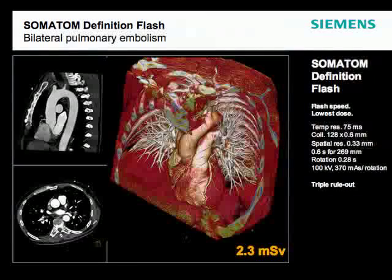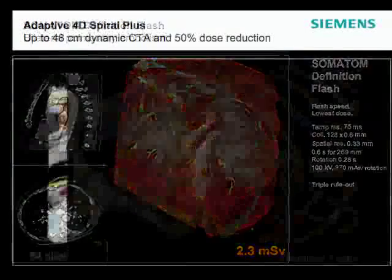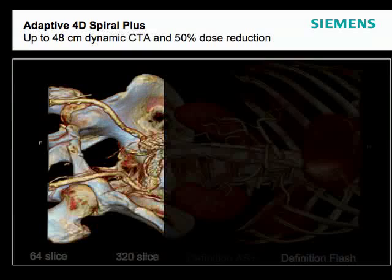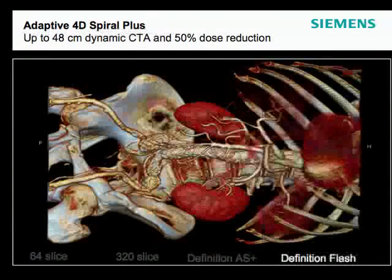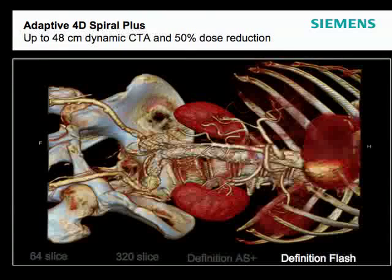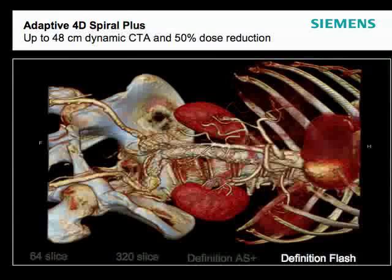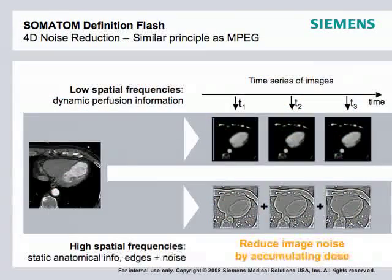Adaptive spiral technology provides phase-resolved imaging showing venous and arterial phases as well as pre-contrast, so all dynamics are visible. Coverage ranges from 64 up to 48 centimeters with flash, and the scanner moves at 43 centimeters per second — extremely fast. Phase-resolved imaging is achieved at 50% dose reduction by combining high and low spatial frequencies, using static anatomical information for edges and noise, thereby reducing overall dose by 50%.